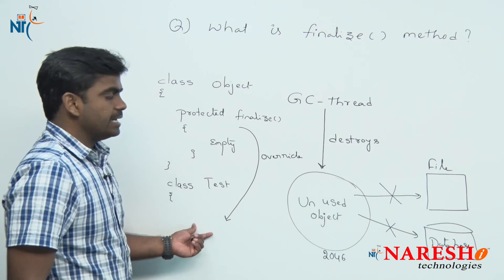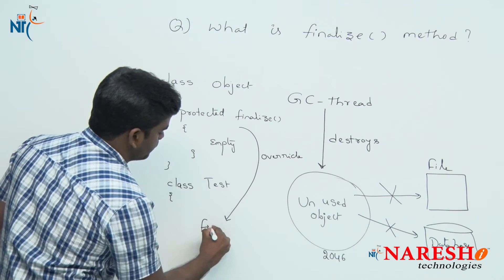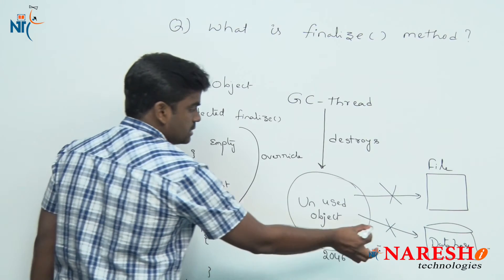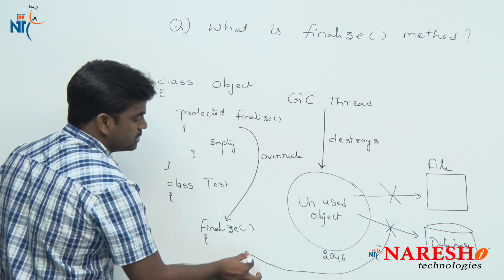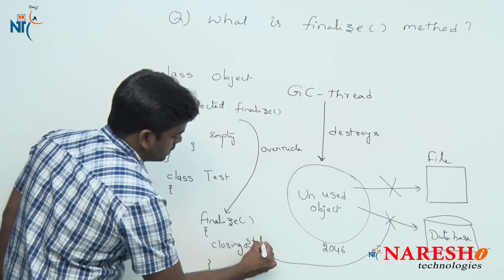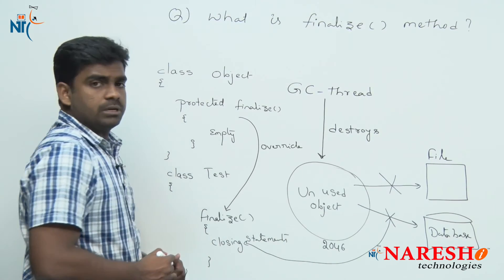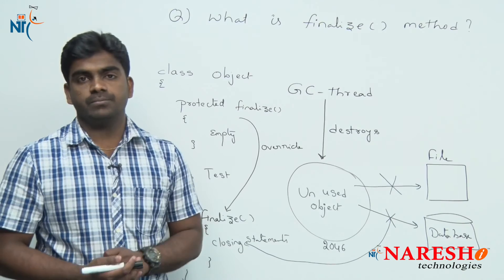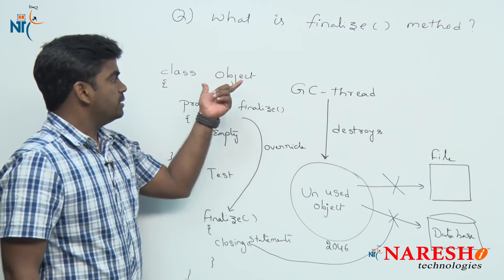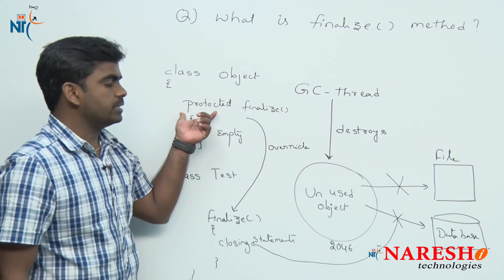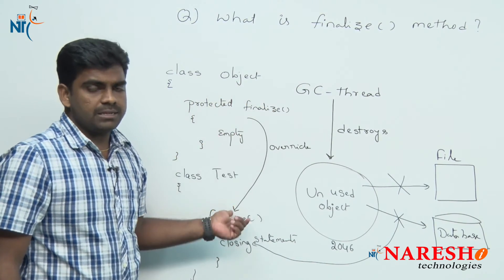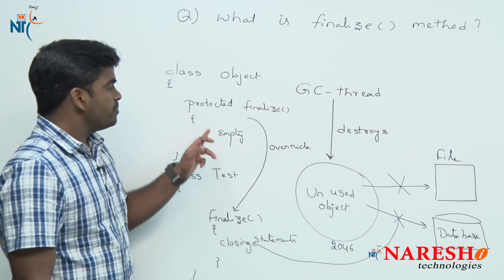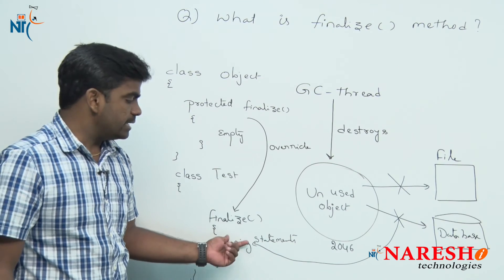What does the finalize method contain? If you are overriding the finalize method, you place the destruction logic — nothing but closing statements. Before destruction of the object, how to release resources — that is what you write inside finalize. The finalize method is available in the Object class and is a protected method. Since every class is a subclass of Object class, you can override that protected method in every class of a Java application. The finalize method contains closing statements.